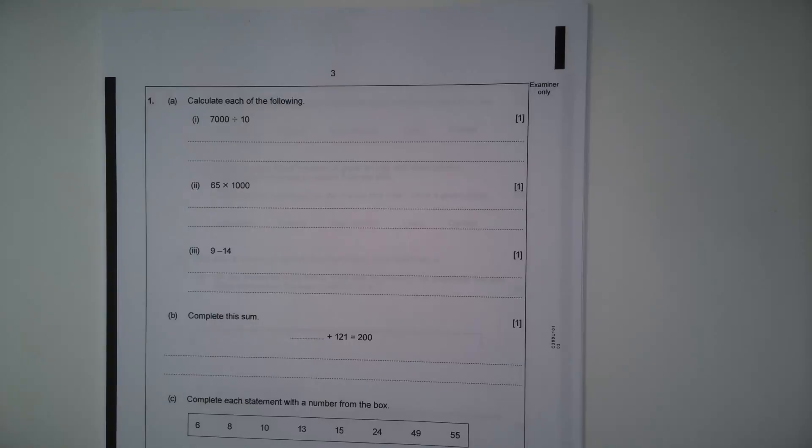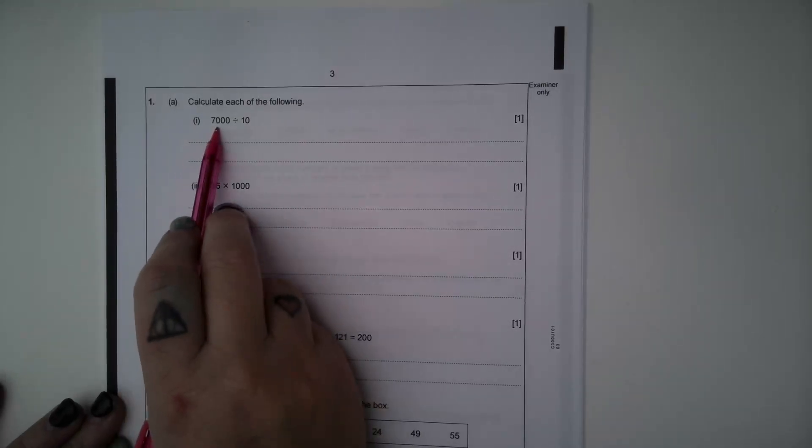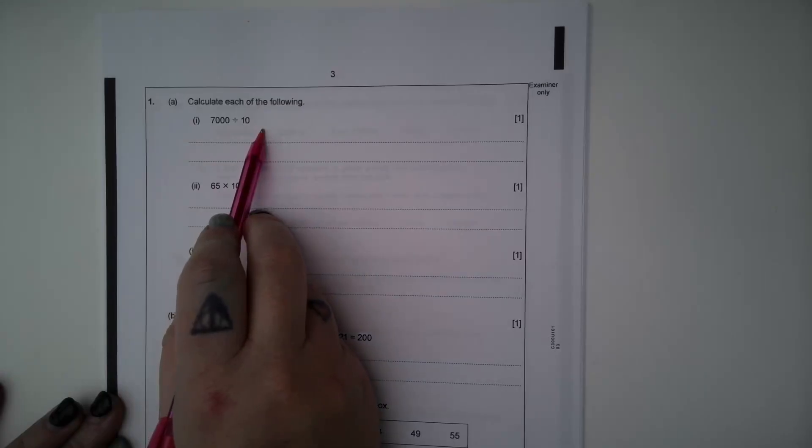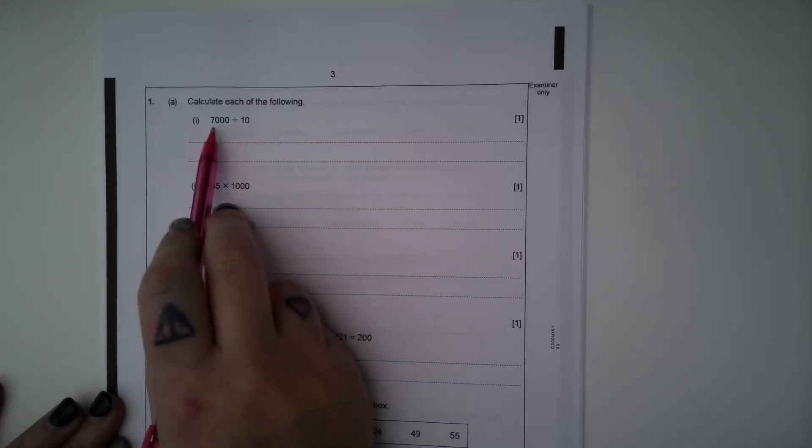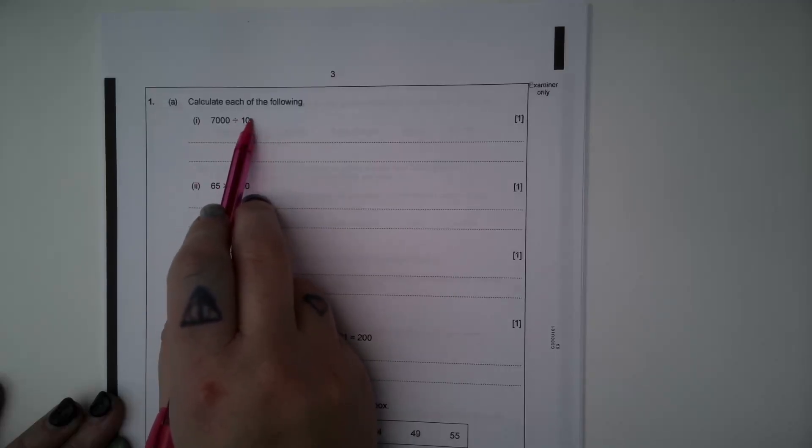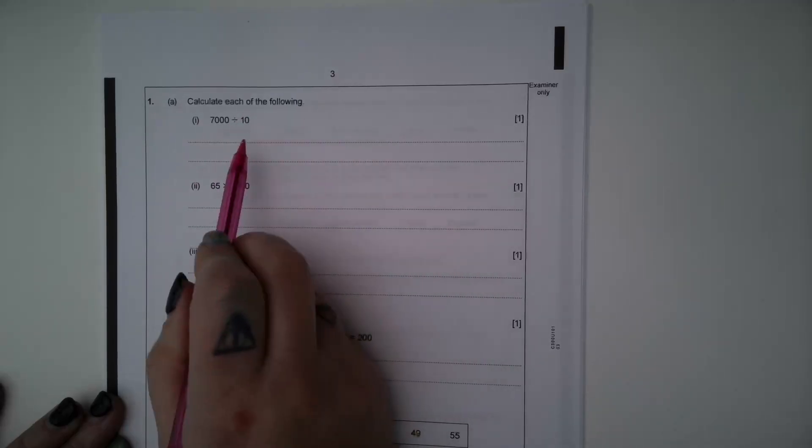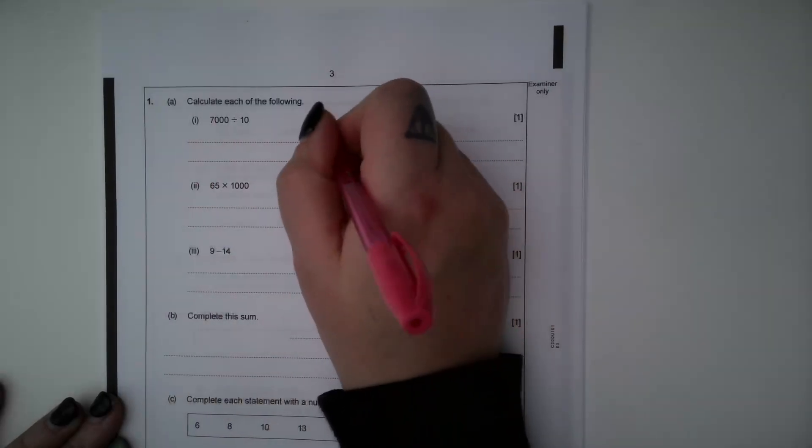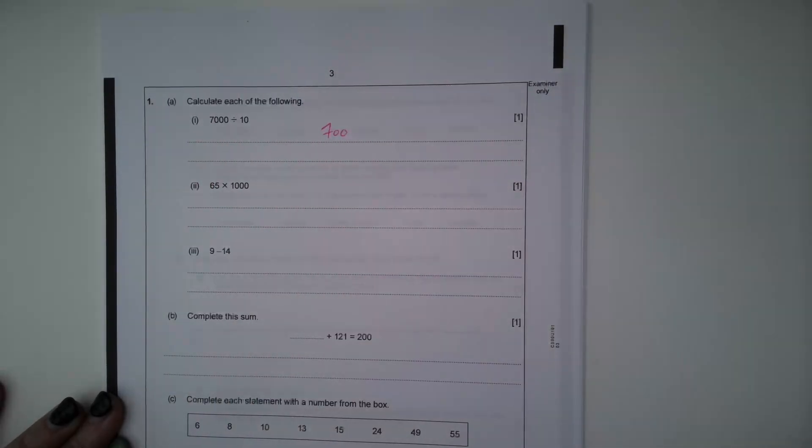Question 1, Part A, calculate each of the following. Part 1, 7000 divided by 10. If I'm dividing by a power of 10, these digits are going to move one place to the right for 10, two places to the right for 100, etc. So this is going to become 700.